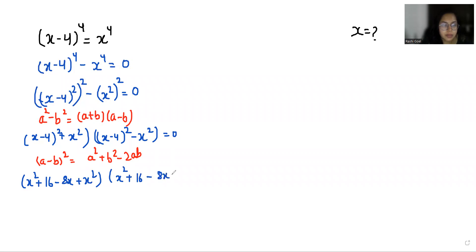So from here we can cancel out plus x² minus x². Here x² and here x² plus x² is 2x². So we get 2x² - 8x + 16.